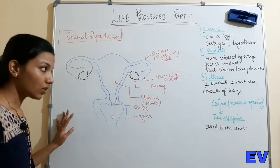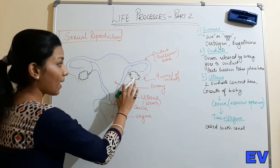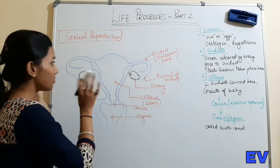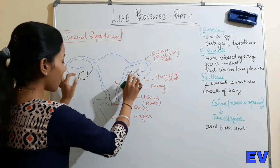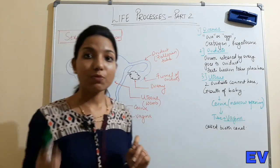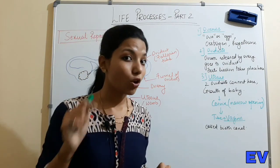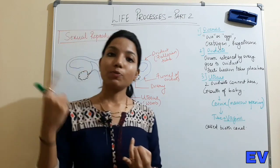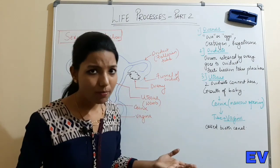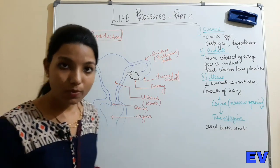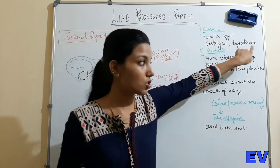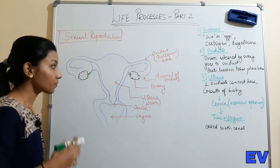In the female reproductive system, first draw a pair of ovaries - one on each side, same on both sides. Just like in males, the testis produces sperms and male sex hormones, similarly in females, the ovaries produce eggs (ovum) and female sex hormones. The female sex hormones are called estrogen and progesterone.